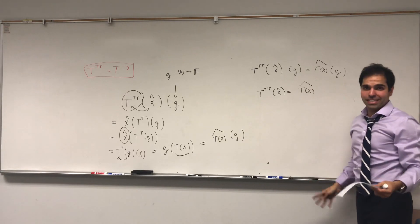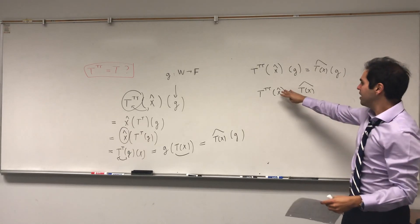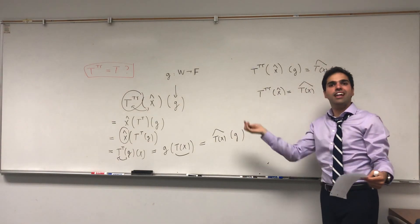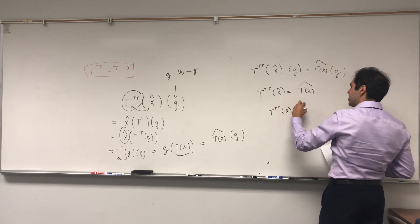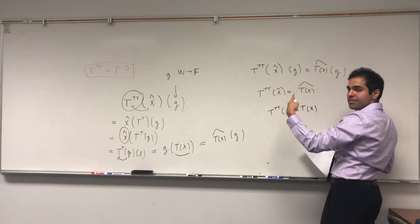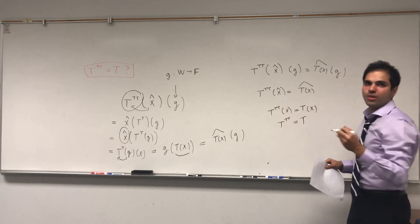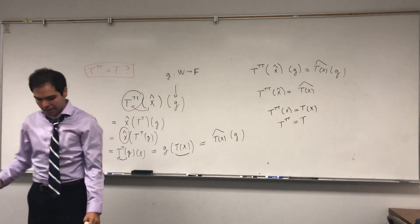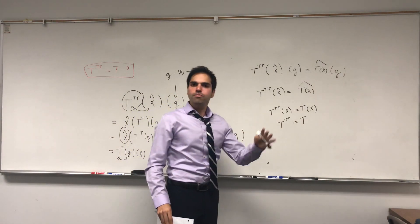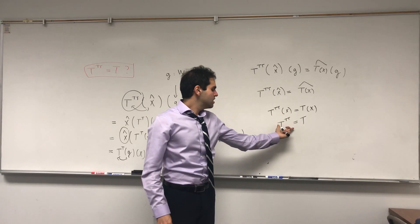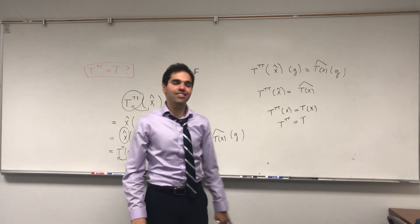As I said, strictly speaking, T transpose transpose is not equal to T, but let's say we remove the hats, which we can do because there's a nice isomorphism between the two. What this is telling you is that T transpose transpose of X equals T of X. Under this identification, because X was arbitrary, we actually get that T transpose transpose is T. So even though it's not necessarily true that they're equal, under those identifications they are equal. And in particular, it does follow that their matrices are the same, because then the matrix of T transpose transpose is A transpose transpose, which is A.